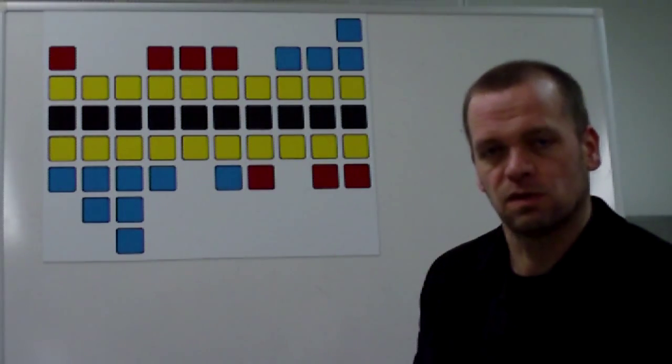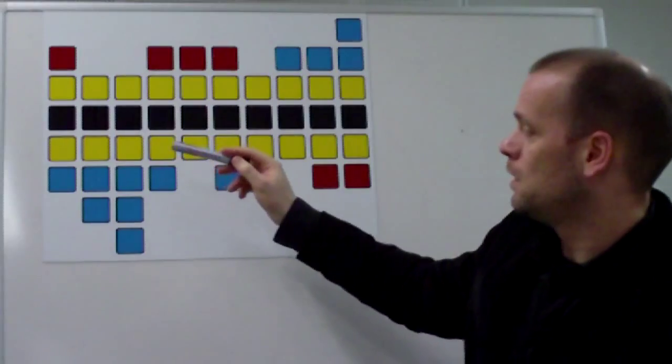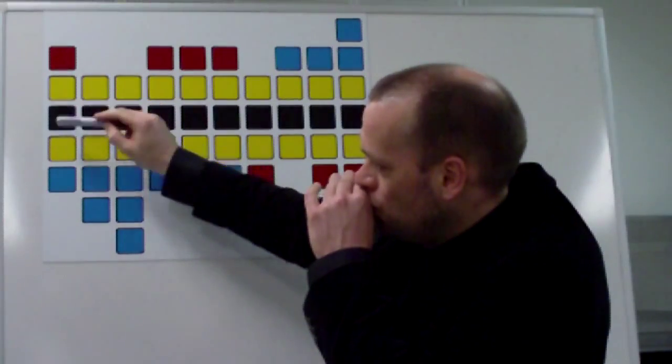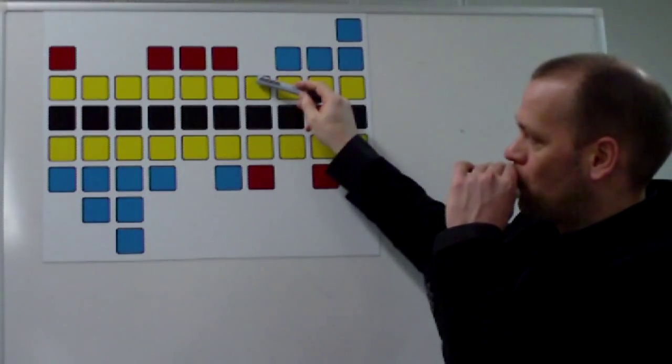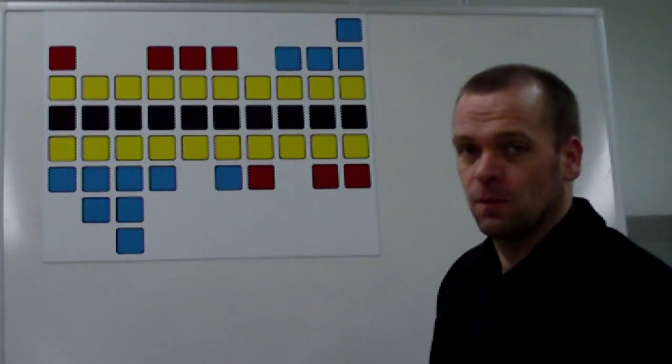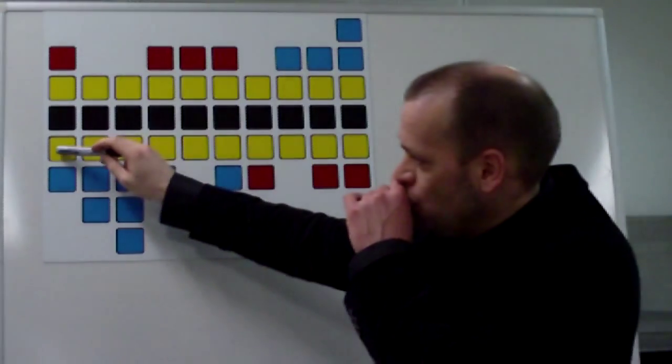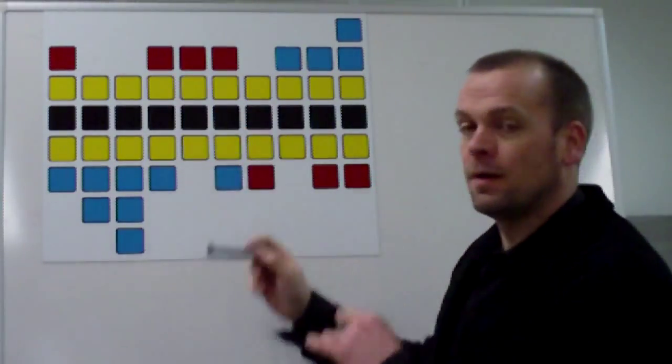And what do we mean with modes? A mode of a scale means that you play the same notes as the scale but start on a different note. If we look at the C major scale, start here, I am going to play it over two octaves so I have room to start on different notes.